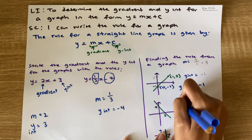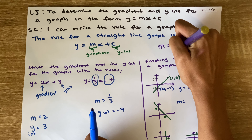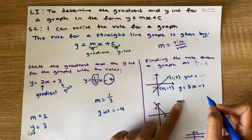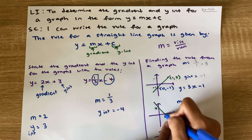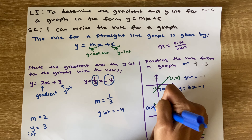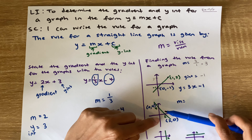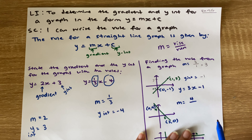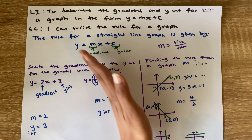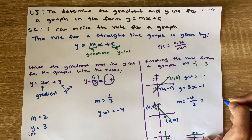Let's have a look at another one. To calculate the gradient, we do rise divided by run. We have two points: this point here — remember, x-coordinate first — which is (2, 0), and this coordinate, which is (0, 4). So my rise is going from 0 to 4, that's 4, over my run, going from 0 to 2, which is 2. Now if I look at this graph, it's pointing downward, which means my gradient has to be negative. So my gradient is negative 4 divided by 2, which is negative 2.